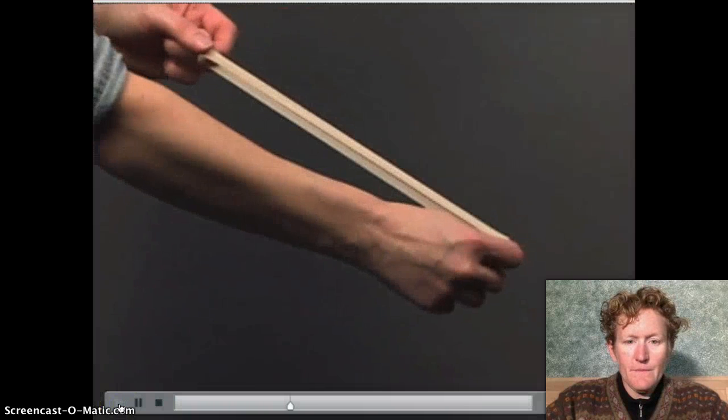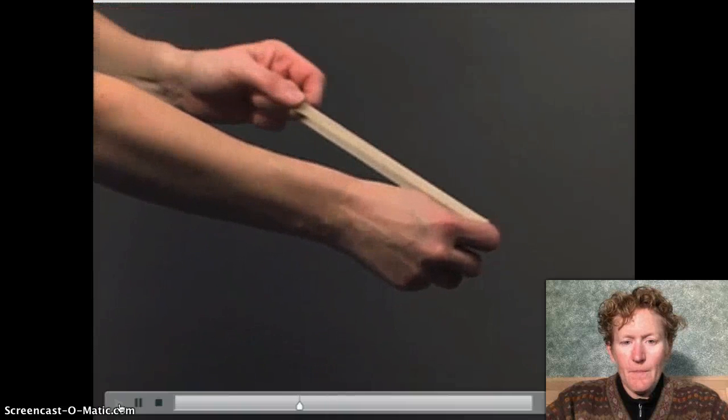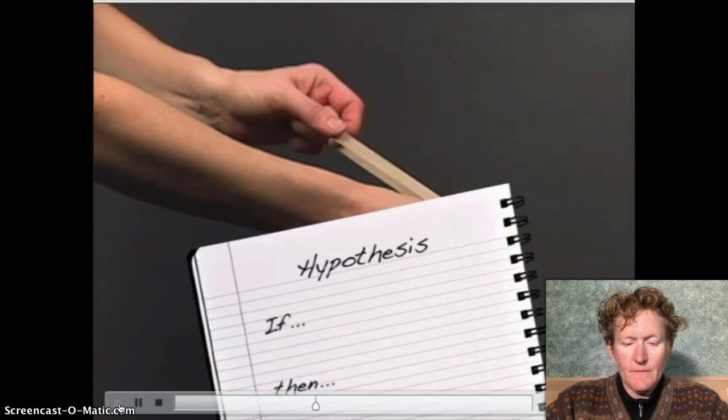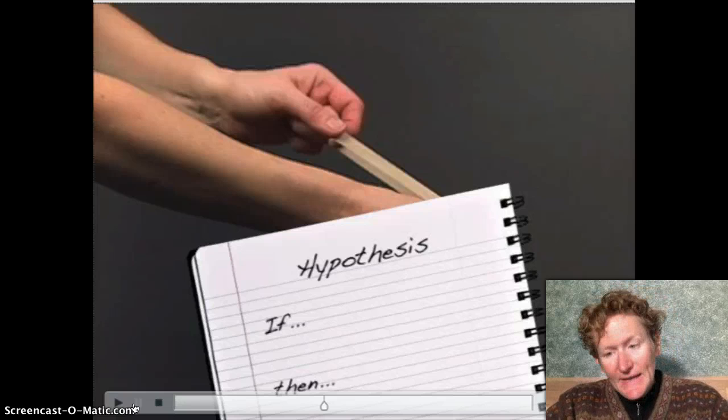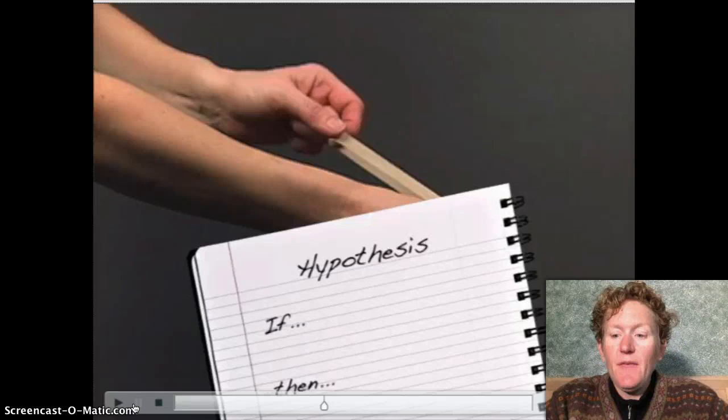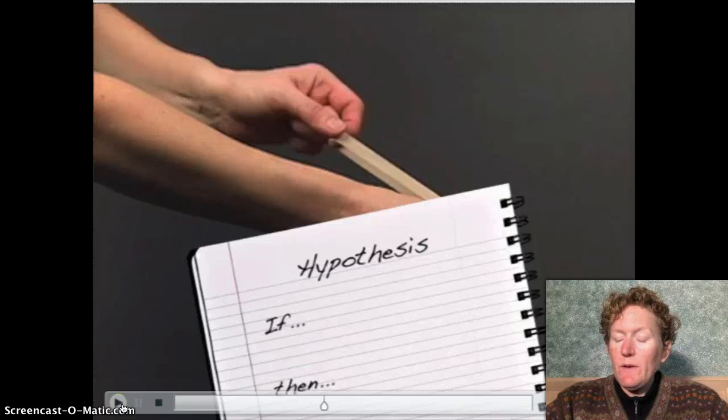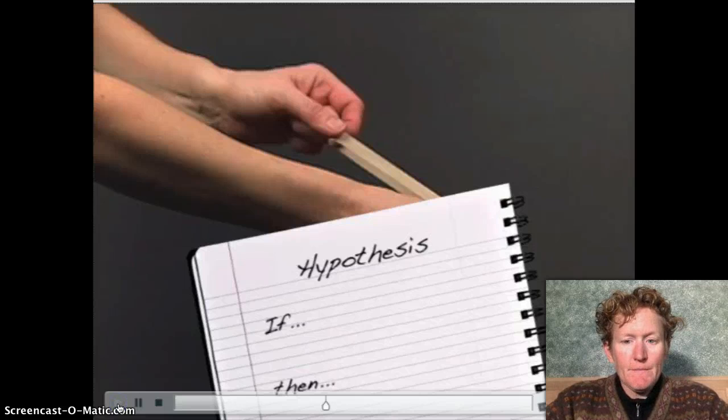Use your prior knowledge to write a hypothesis that describes how a rubber band might respond to different forces. A good hypothesis should take the form of an if-then statement, such as if a greater force is applied to a rubber band, then the answer may seem obvious. And then you also want to add a because statement. Remember, in this class we use if-then-because for hypotheses. You want to explain why what you think is going to happen is going to happen, what science is behind your hypothesis.